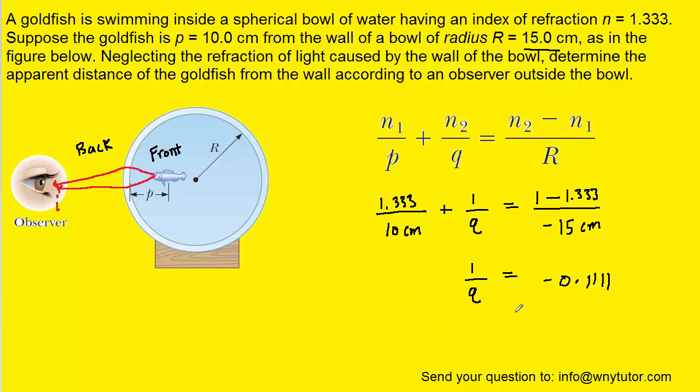And then to solve for Q, we could do a little trick here. We could place the quantity on the right over 1. And then since we have a single fraction on the left side and a single fraction on the right side, we can actually invert those two fractions. And when we do that, we're essentially flipping them upside down. So we end up with Q over 1. But of course, Q over 1 is just Q.